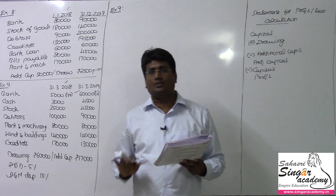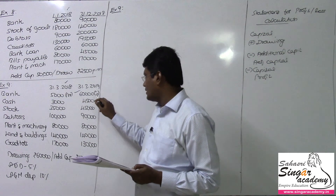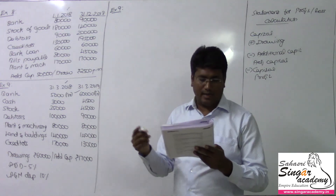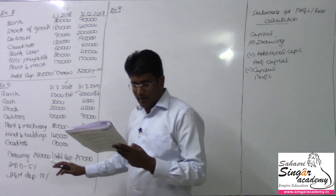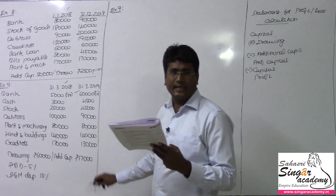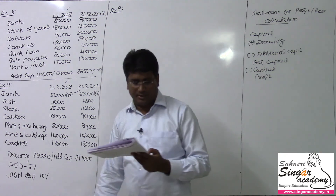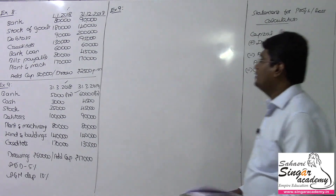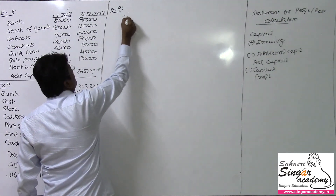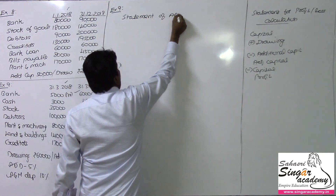We have to open only the opening statement of affairs and the closing statement of affairs. Cash at bank — debit side, credit side — and assets. Cash, stock, debtors, plant and machinery, land and building, sundry debtors — these are the items given. I am going to open the opening statement of affairs first. Statement of affairs as on the opening date.